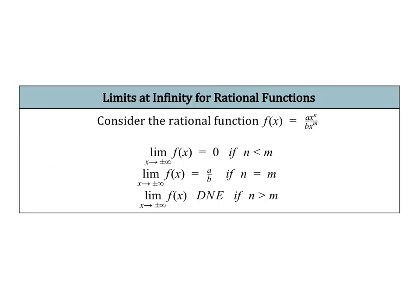To find the limit of a function as x approaches positive or negative infinity for rational functions, there are really three rules to follow. These three rules are the same rules we talked about when we learned how to find horizontal asymptotes of rational functions, because that's essentially what a horizontal asymptote is — it's a limit.